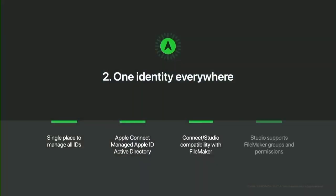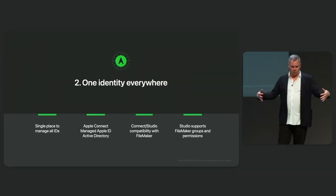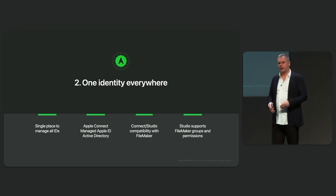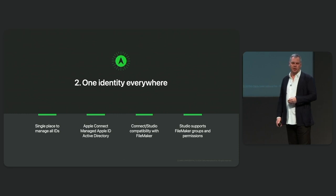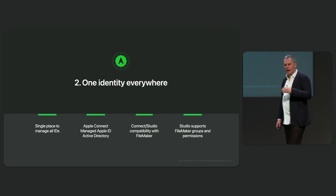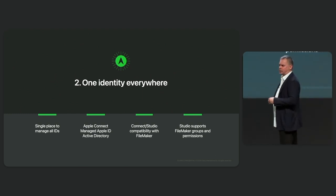When it comes to unified identity across the platform, we're working towards a single place to manage user identity, including for cloud. It works well with Apple Connect, managed Apple IDs, and services like Active Directory. Initially, we're assuming that all users on the platform are either already using FileMaker or are new users coming in through Apple School Manager. As we design capabilities like groups and permissions in Connect and Studio, we are ensuring compatibility with FileMaker and with those directory services used by Apple School Manager.